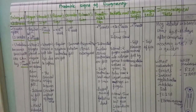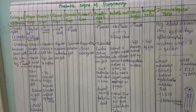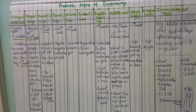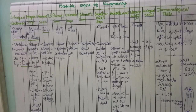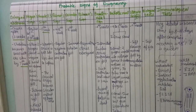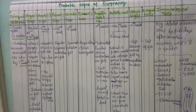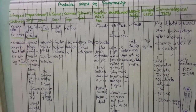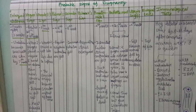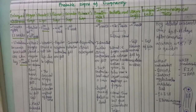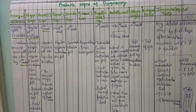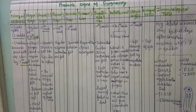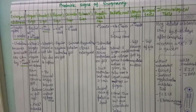Palmer sign is positive at 4 to 8 weeks; regular rhythmic contractions of the uterus can be elicited by bimanual examination. Osiander sign appears at the eighth week and is characterized by increased pulsation. Piskacek sign is asymmetrical enlargement of the uterus.